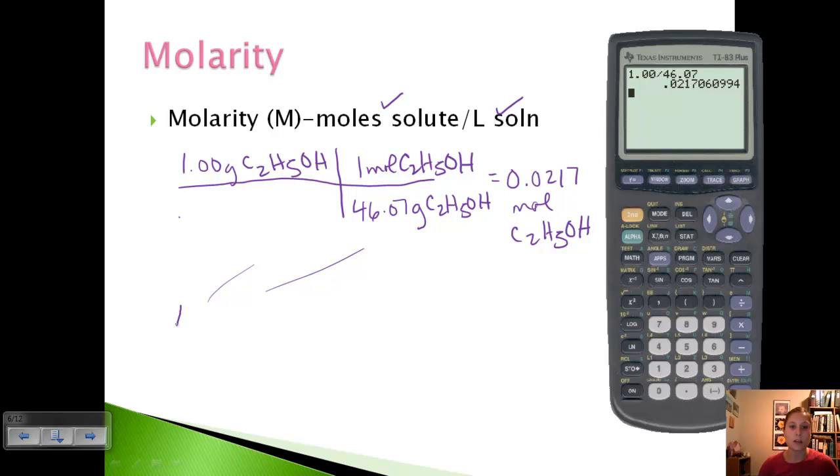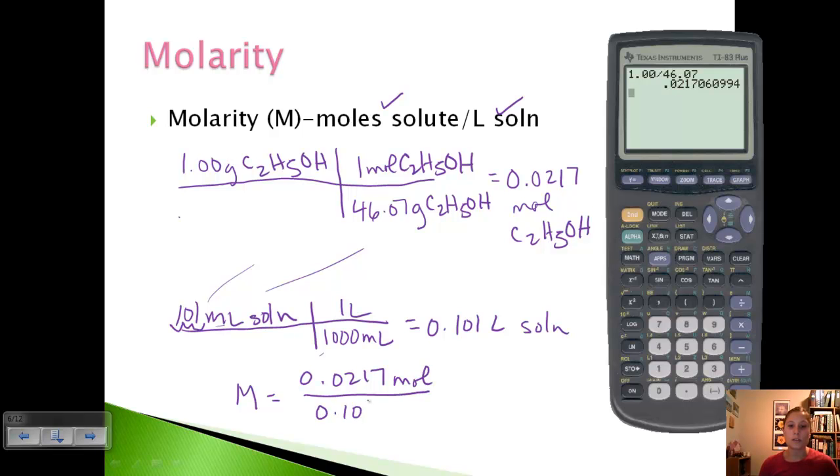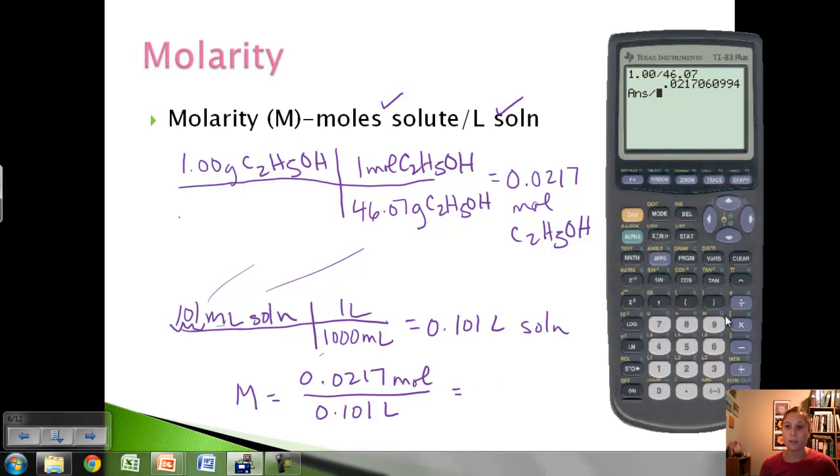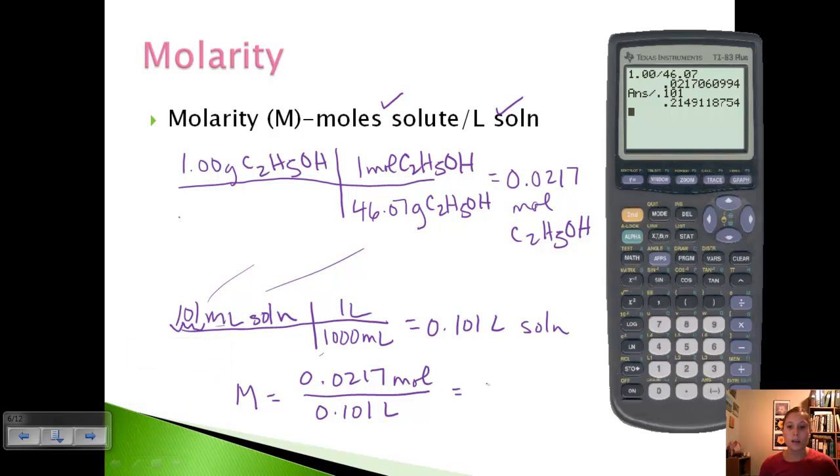The problem told us we had 101 milliliters of solution. Since there are 1000 milliliters in one liter, we move the decimal back three spots to get 0.101 liters. To find molarity, we take our 0.0217 moles divided by 0.101 liters, which equals 0.215 molarity.